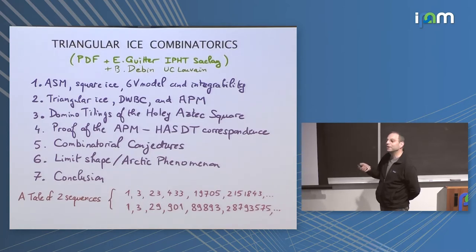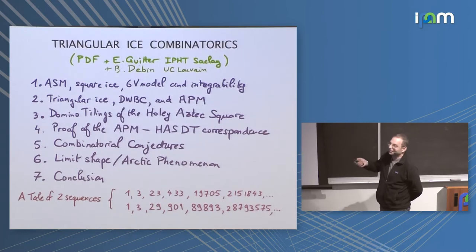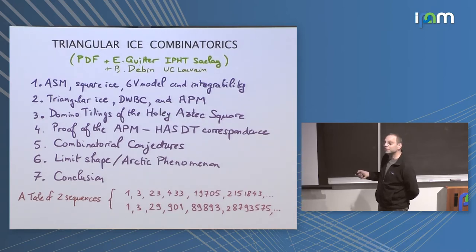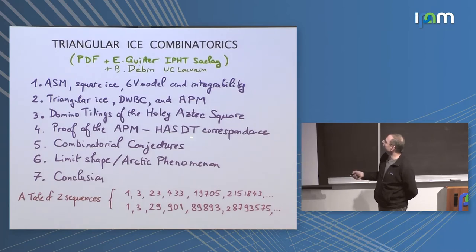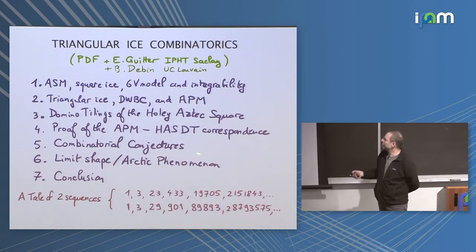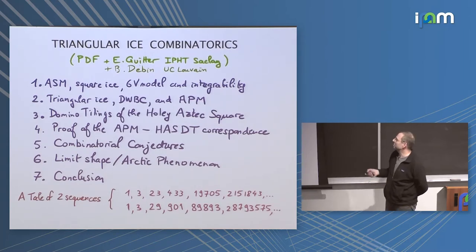It could have been AST, which would have been alternating sign tensors. But it's still matrices clearly, so what can alternate? Alternating phase matrices — signs and phases. So I'll show you what these things are. It's a combinatorial object that we are going to be able to count. And then for something completely different, we are going to look at the domino tilings of what I call the Holy Aztec Square — Holy has an E here, so nothing religious — and this is the acronym HASDT: Holy Aztec Square Domino Tiling. Sorry about that. There will be a correspondence and I'll show you how the proof goes.